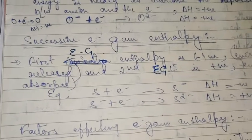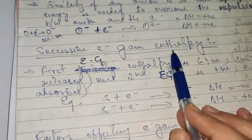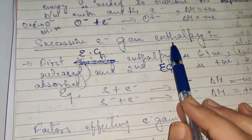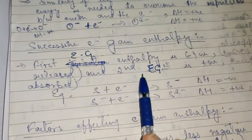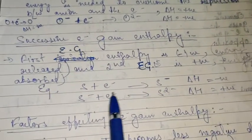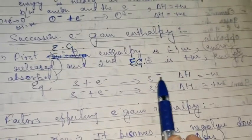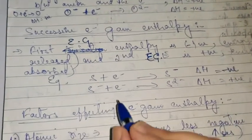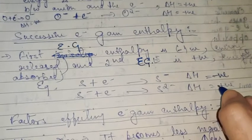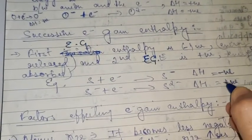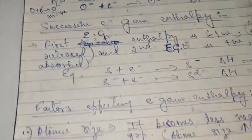For successive electron gain enthalpies, similar to successive ionization enthalpies: the first electron gain enthalpy is negative - energy is released. But in the second case, electron gain enthalpy will be positive. For example, sulfur, a non-metal, accepts the first electron to form S⁻ with ease and energy is liberated, indicated by a negative sign. But when you try to give one more electron to the sulfide ion to form S²⁻, energy must be supplied because of repulsion between the negative charge on sulfur and the negatively charged electron.